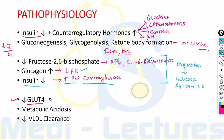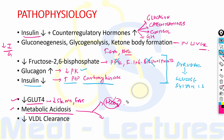Insulin deficiency also leads to decreased glucose transporter GLUT4, which impairs glucose uptake into skeletal muscle and adipose tissue, reducing intracellular glucose metabolism. The metabolic acidosis in DKA is due to two reasons: first, bicarbonate is consumed in neutralizing the keto acids, which are the ketone bodies present in their acidic form; second, there is associated lactic acidosis which also contributes to metabolic acidosis.